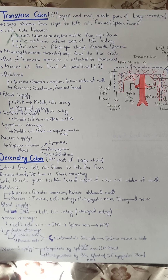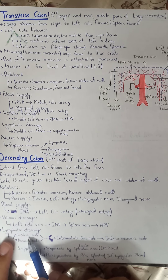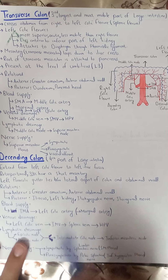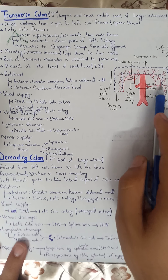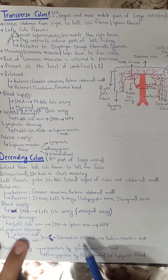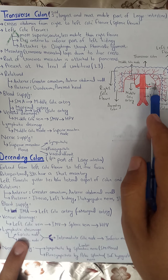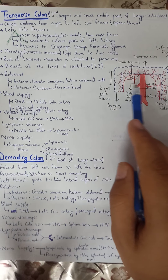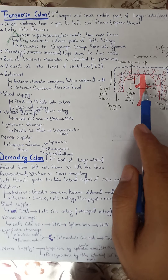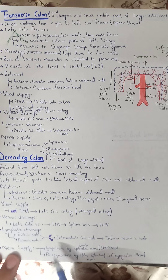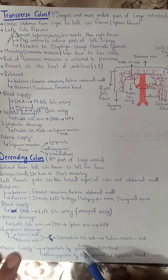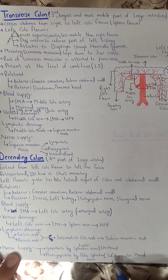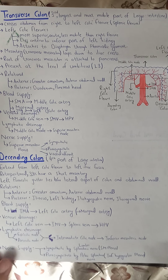Lymphatic drainage of the descending colon: lymph passes through epicolic and paracolic nodes, then to intermediate colic nodes along the left colic artery, then to inferior mesenteric nodes along the inferior mesenteric artery. Nerve supply: sympathetic from the lumbar splanchnic nerves via the superior mesenteric plexus; parasympathetic from the pelvic splanchnic nerves via the inferior hypogastric plexus.